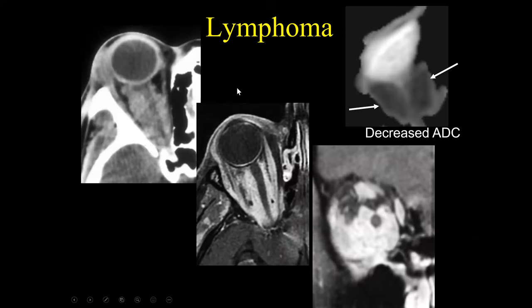This is an example of lymphoma involving the orbits and the optic nerve. Lymphoma tends to be a little bit more advanced when it presents and can be relatively bulky. Notice the bulkiness of this enhancement — it has more of a softer appearance and is not really compressing the optic nerve, but rather has diffuse enhancement and a more bulky appearance. This is the classical appearance of lymphoma.